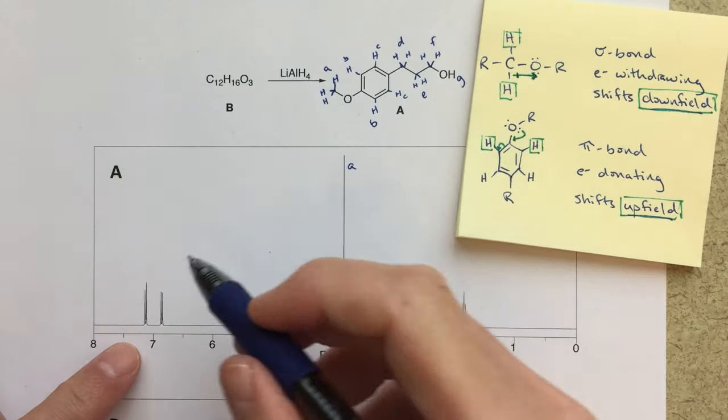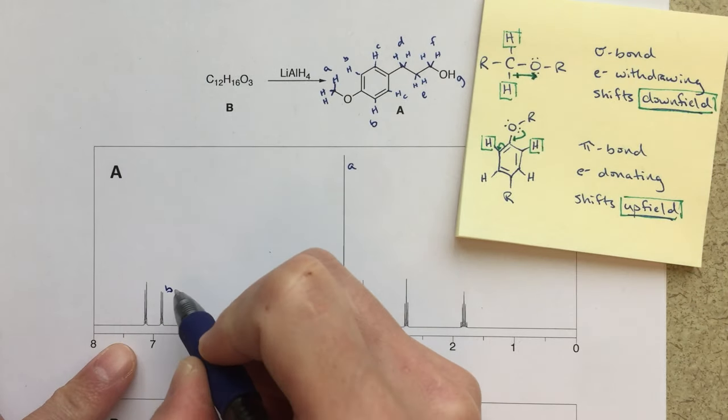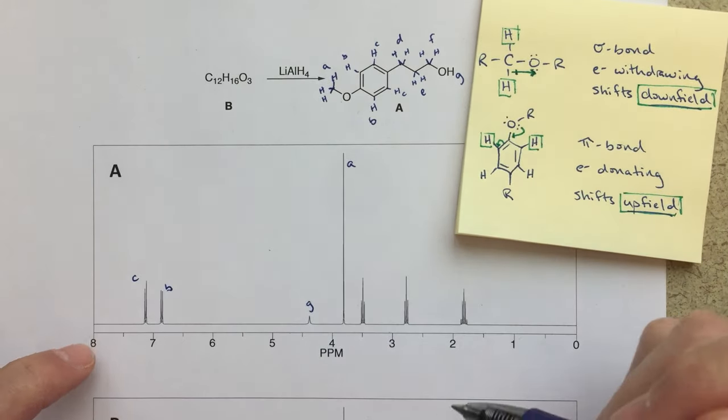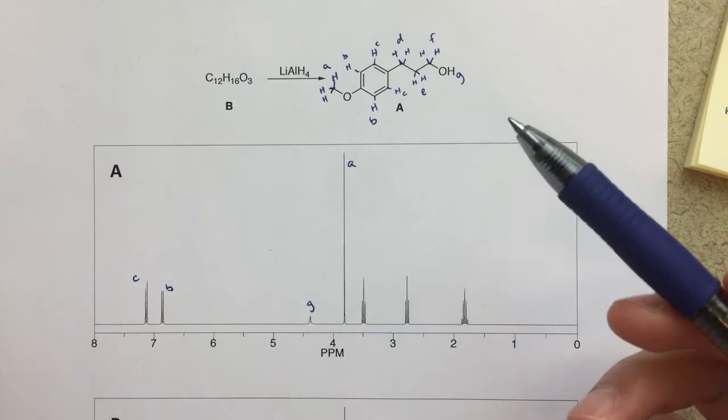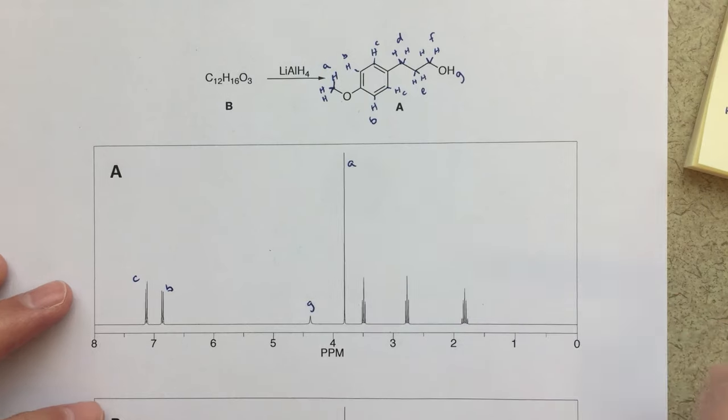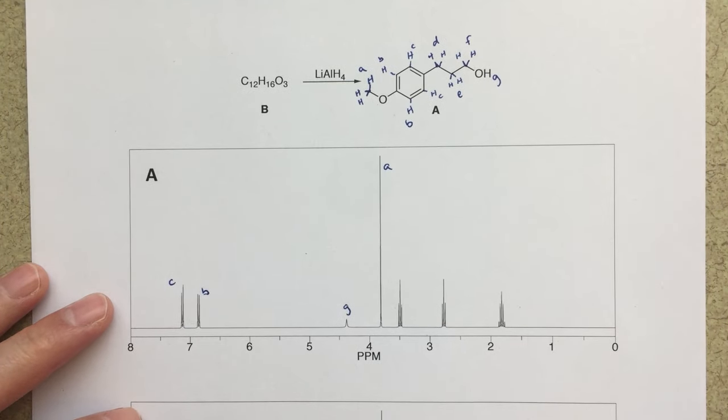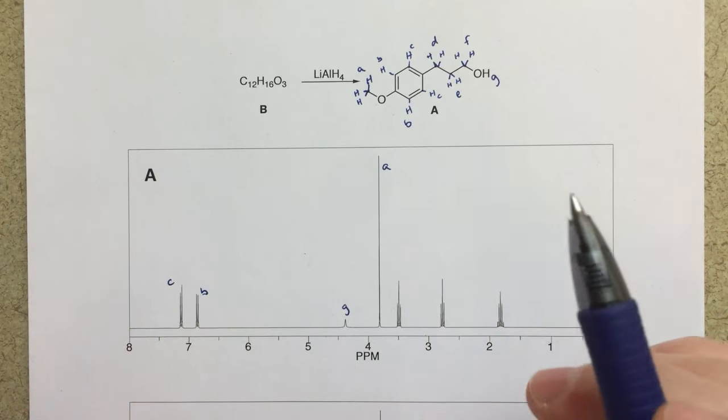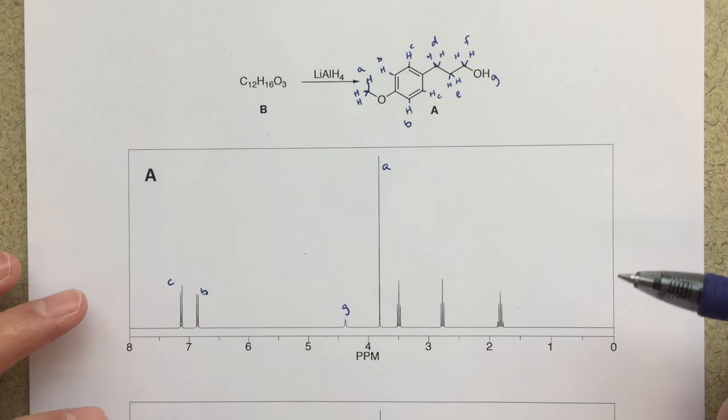So these B protons, they're actually going to be the ones that are here, and then these C protons, those are going to be up here, and both of these should be two H doublets. Two H because obviously there's two of them, and then doublets because on the adjacent carbon, we're only getting one other proton, so splitting into a doublet. So maybe something that you wouldn't have necessarily expected, but a good thing for us to talk about.